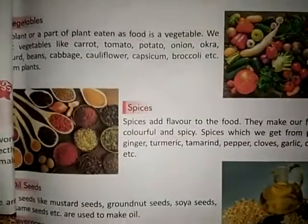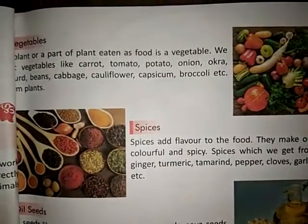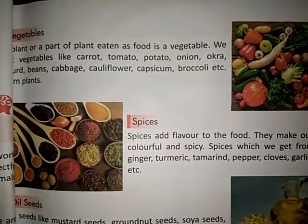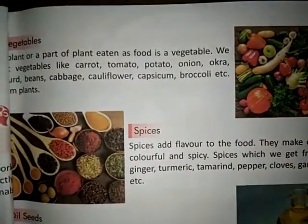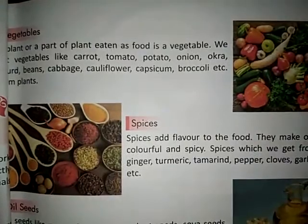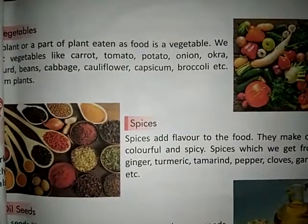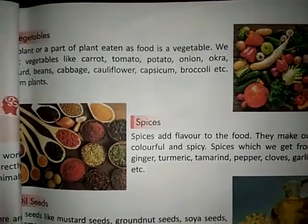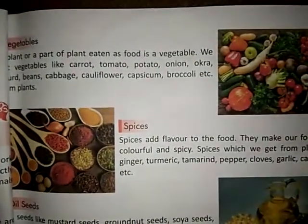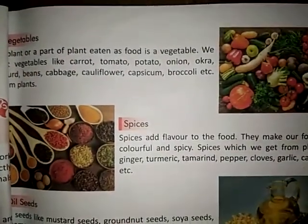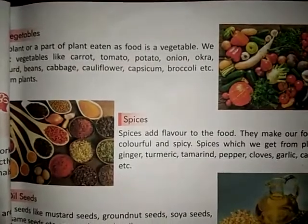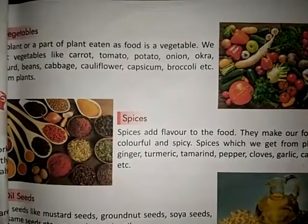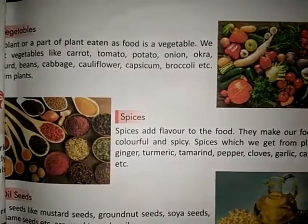Now come to vegetables. A plant or a part of a plant eaten as food is a vegetable. We get all vegetables from plants, such as carrot, tomato, potato, onion, cabbage, etc.